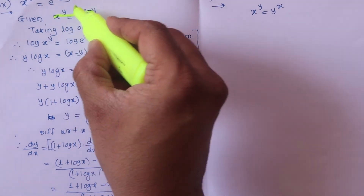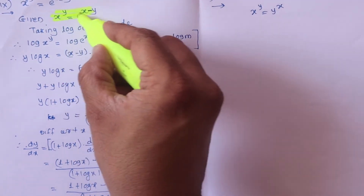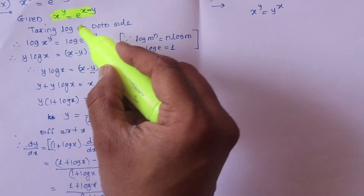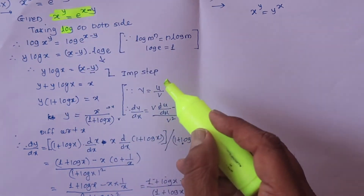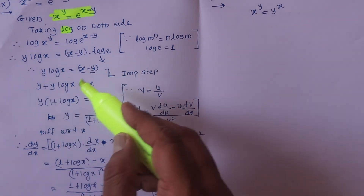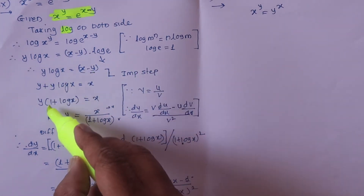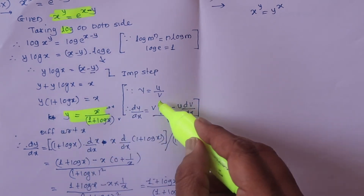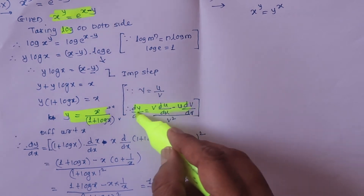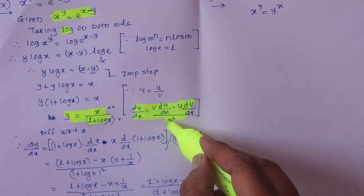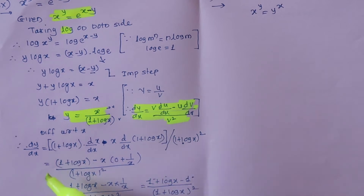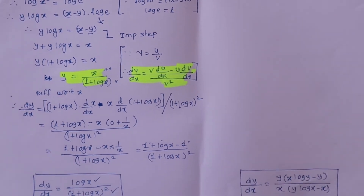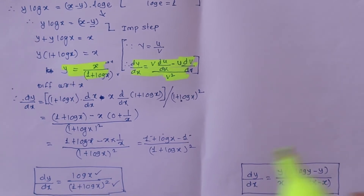So to recap: this is an implicit function, we took the log, then in the important step y goes to the other side, we take y common and simplify, then apply the quotient rule to get the final answer.